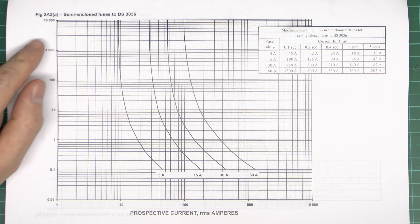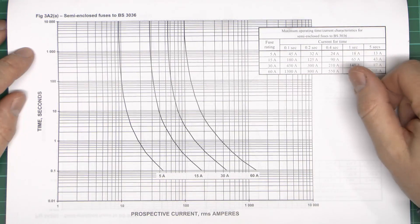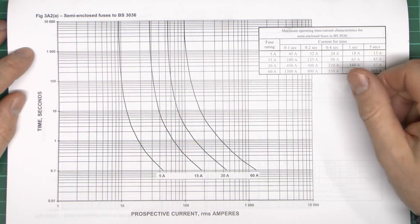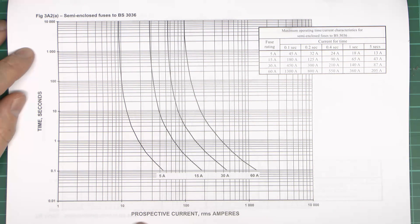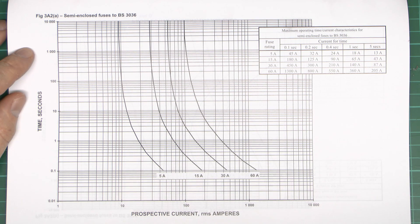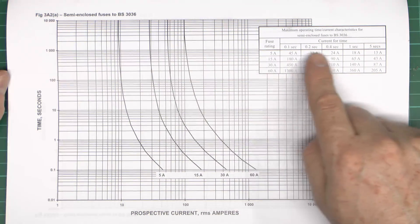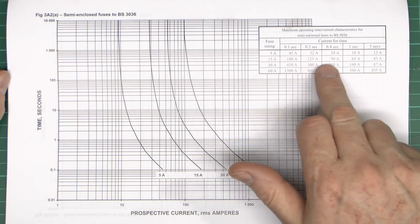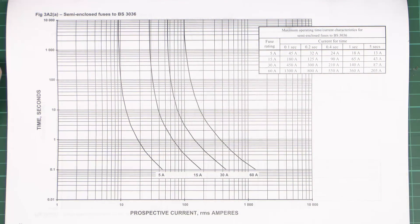Now for an actual graph from the wiring regulations — this one is for semi-enclosed fuses to BS3036, the rewireable style typically found in older Wylex consumer units. What we've basically got here is a graph showing time in seconds on the side and current along the bottom. We've got four lines drawn on here representing the different values of fuses: 5, 15, 30, and 60 amps. The purpose of this is to identify what current will actually cause the fuse to disconnect within a certain time. There's also a little chart here showing exactly the same information as the graph — it's just that they've picked out some common values, so for the more common choices you can simply look here rather than finding the relevant point on the graph.